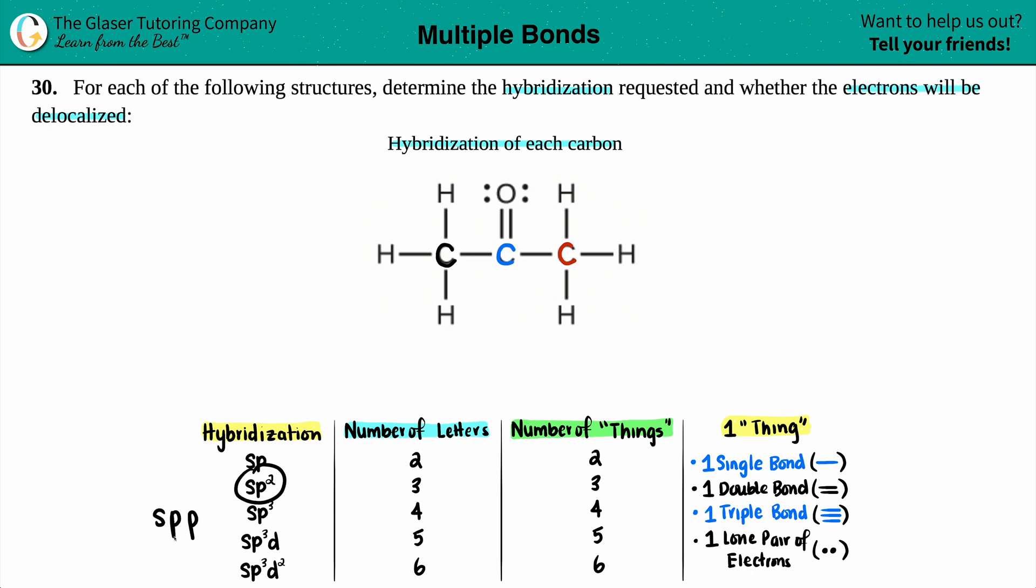If I take one P away, that's SP2, two P's, total of three letters. And if I strip one away, that's SP, total of two letters. The number of letters always equals the number of things. Two letters, two things. Three letters, three things.